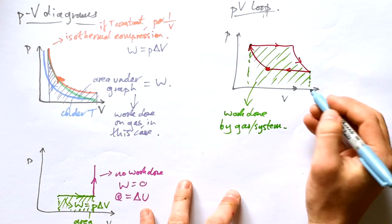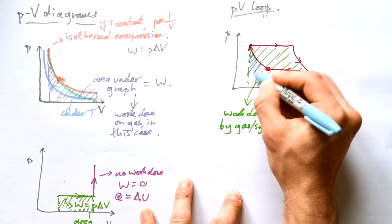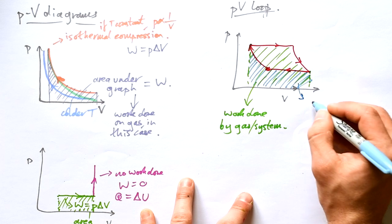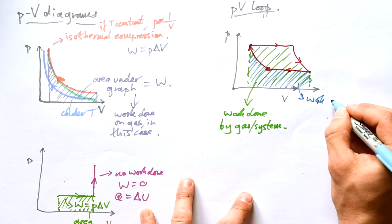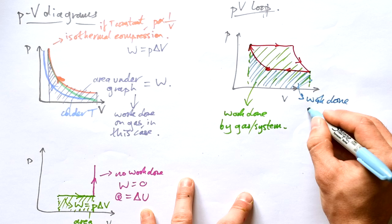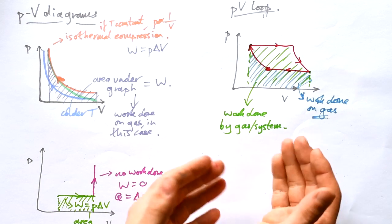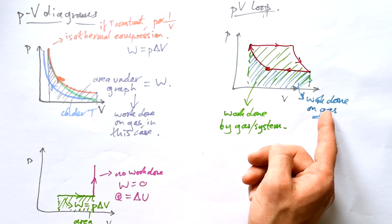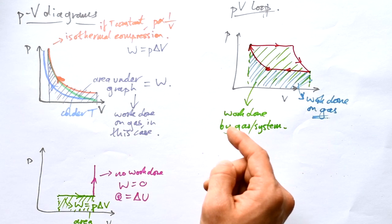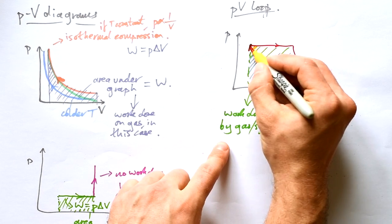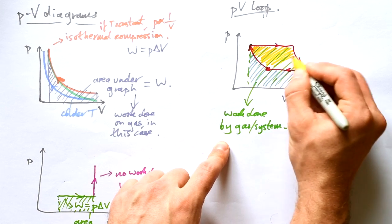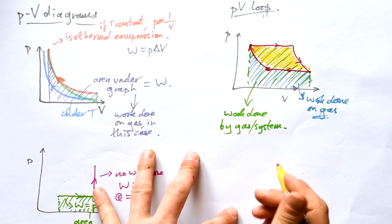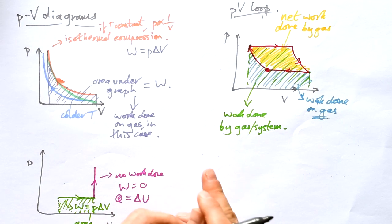But then on the way back when the volume is decreasing, we have this area under the graph. This is the work done on the gas or on the system. And so if we have this much work done by the gas and then this work done on the gas, then that means that we have a certain amount of net work resultant work done by the gas. And this is kind of what happens with an engine.